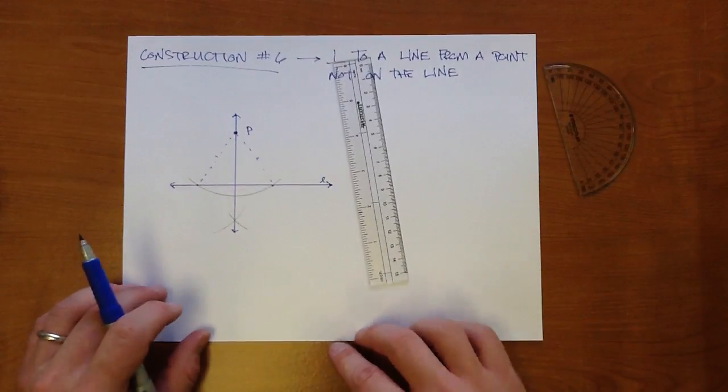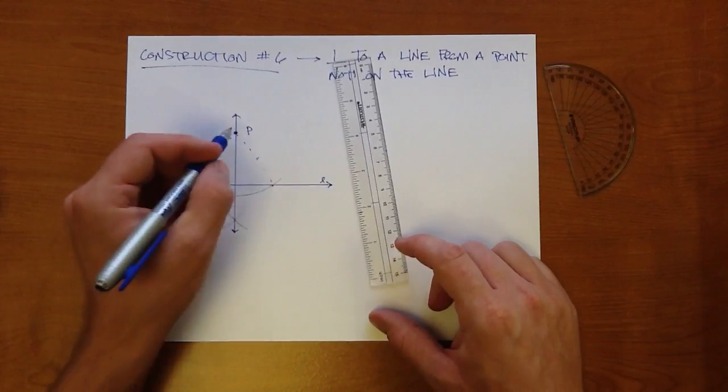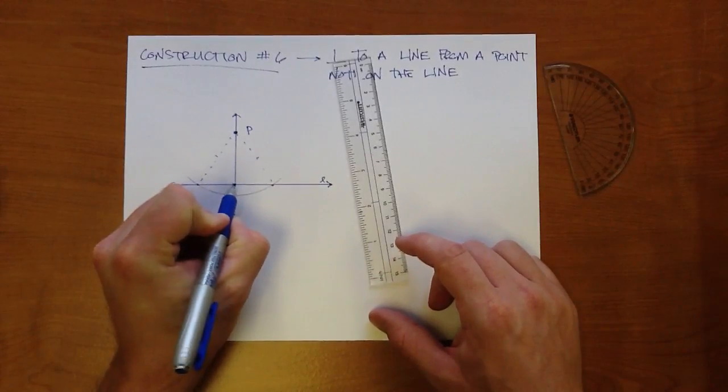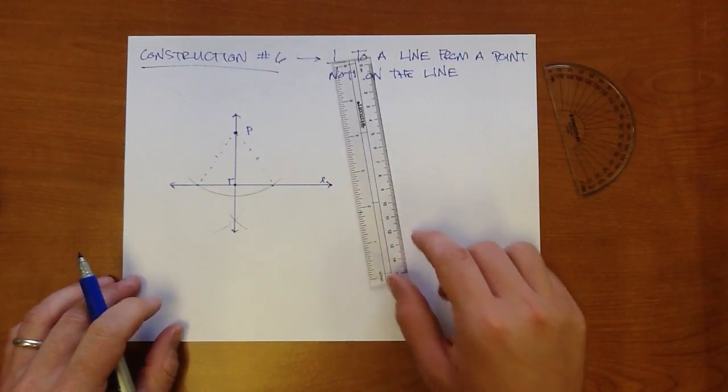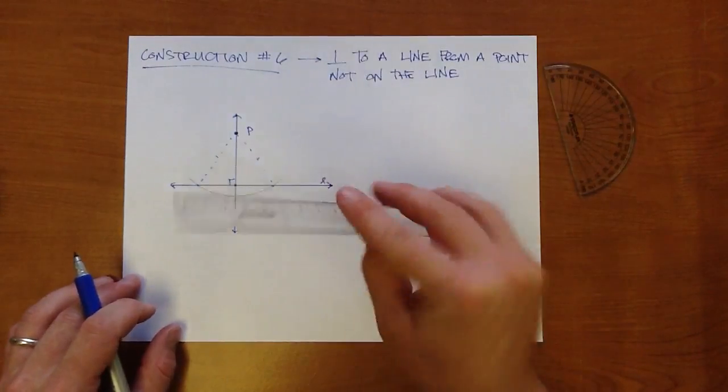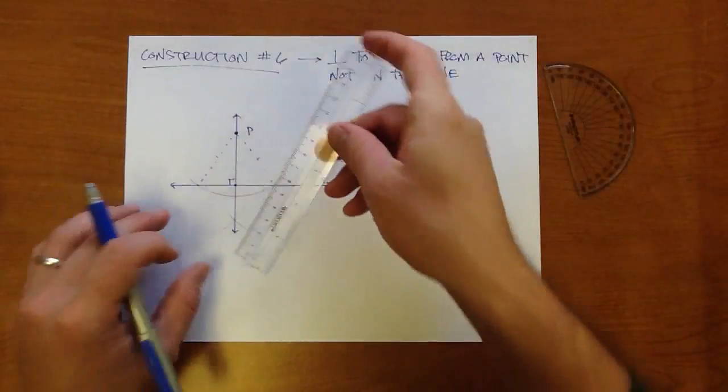So let's say I'm asking you to figure out what is the length or the distance from point P to line L. This is where that line meets. This is our perpendicular. At this point, if they were asking for the distance, you could take out a ruler and actually measure it.